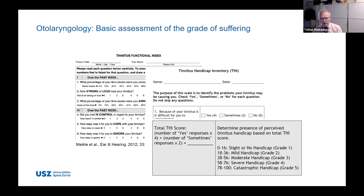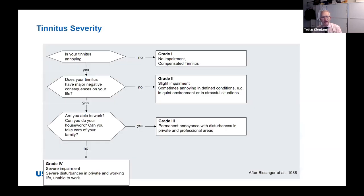Grades one to three are considered a compensated situation, whereas grades four and five indicate a decompensated problem. Here's a simple flow chart to differentiate: grade one means no impairment, fully compensated. Grade two means sometimes annoying with slight impairment. Grade three means the patient can still work, sleep, concentrate but with some difficulty. Grade four means everything is disturbed by the tinnitus. This is an easy way of estimating the degree of suffering.